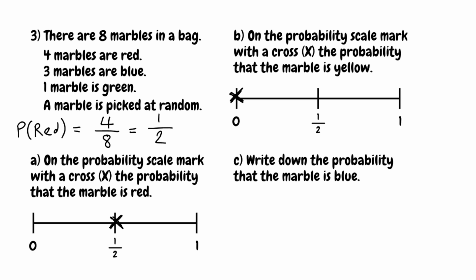For part C, we want to write down the probability that the picked marble is blue. We look for the number of blue marbles — there are three. We put that over the total number of outcomes, which is eight. So we get three eighths. We can't simplify that any further, so the probability of the marble being blue is three eighths.